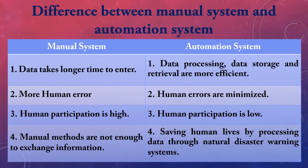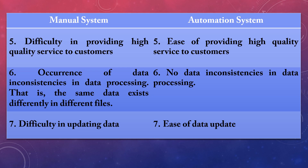If we consider the automatic system, automatic data processing is more efficient than manual data processing when storing, processing, or retrieving data. It also requires less human interaction. Some applications — such as emergency broadcast signals, security updates, space research, scientific processes, or systems dealing with harmful radiation — are better handled using an automatic system rather than a manual one.